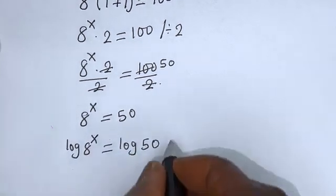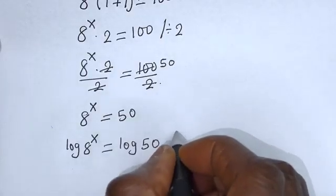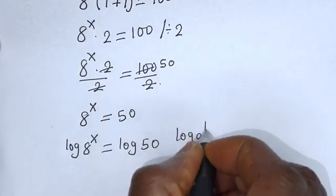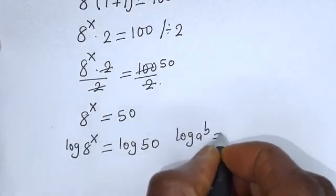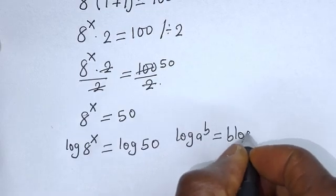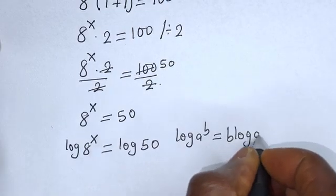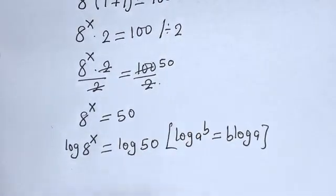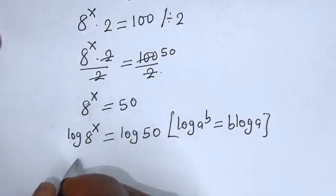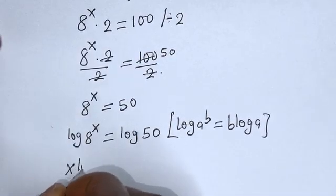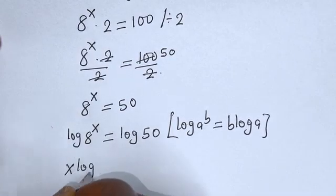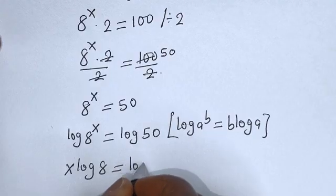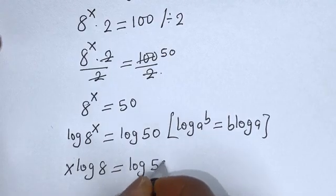Now if you have log a raised to power b, this is equal to b times log a. Using this rule, this can be written as s times log 8 is equal to log 50.